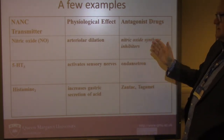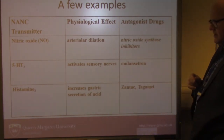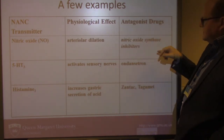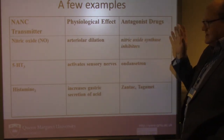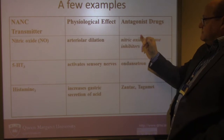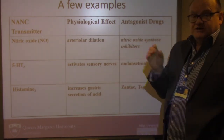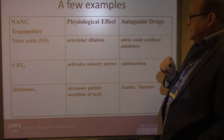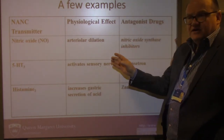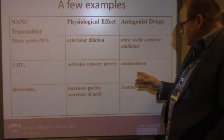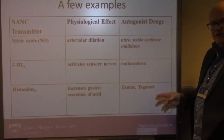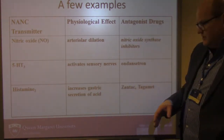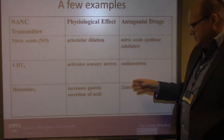There are a number of different antagonist drugs that will block these receptors. You'll see the value of nitric oxide synthase inhibitors — nitric oxide synthase is the enzyme that supports the synthesis of nitric oxide, so blocking it gives a reduction in nitric oxide levels. Then we have ondansetron, which is a 5-HT3 antagonist, and that will reduce the activity and firing of the sensory nerves. And drugs like Zantac or Tagamet are antagonists at histamine H2 and will actually decrease gastric acid secretion — useful for conditions like gastric reflux.